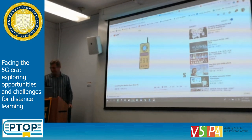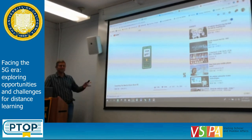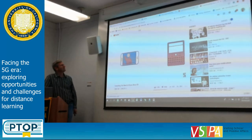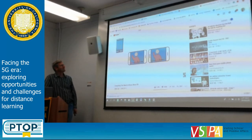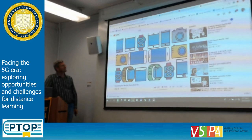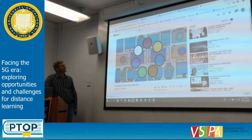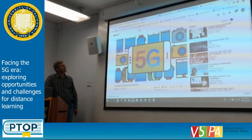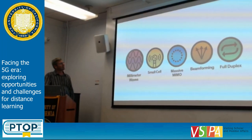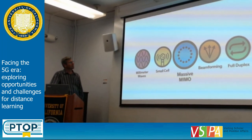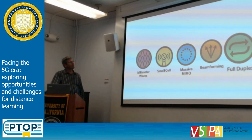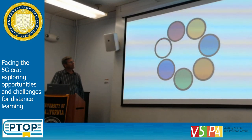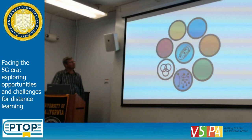1G brought us the very first cell phones. 2G let us text for the first time. 3G brought us online. And 4G delivered the speeds we enjoy today. But as more users come online, 4G networks have just about reached the limit of what they're capable of, at a time when users want even more data. Now we have 5G — the next generation of wireless — which will handle a thousand times more traffic than today's networks. We're still working out many of the kinks with millimeter waves, small cell networks, massive MIMO, beamforming, and full duplex. All of 5G is still ahead of us.